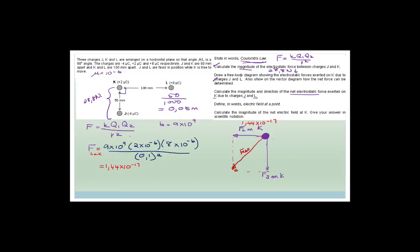Now we work out the force of J on K. It's going to be 9 × 10⁹ multiplied by 2 × 10⁻⁶ and 4 × 10⁻⁶. Remember, you don't have to worry about the pluses and minuses — they just tell us the direction of attraction or repulsion. We need to convert 50 mm to meters by dividing by 1000, giving 0.05 m. So the denominator is (0.05)².